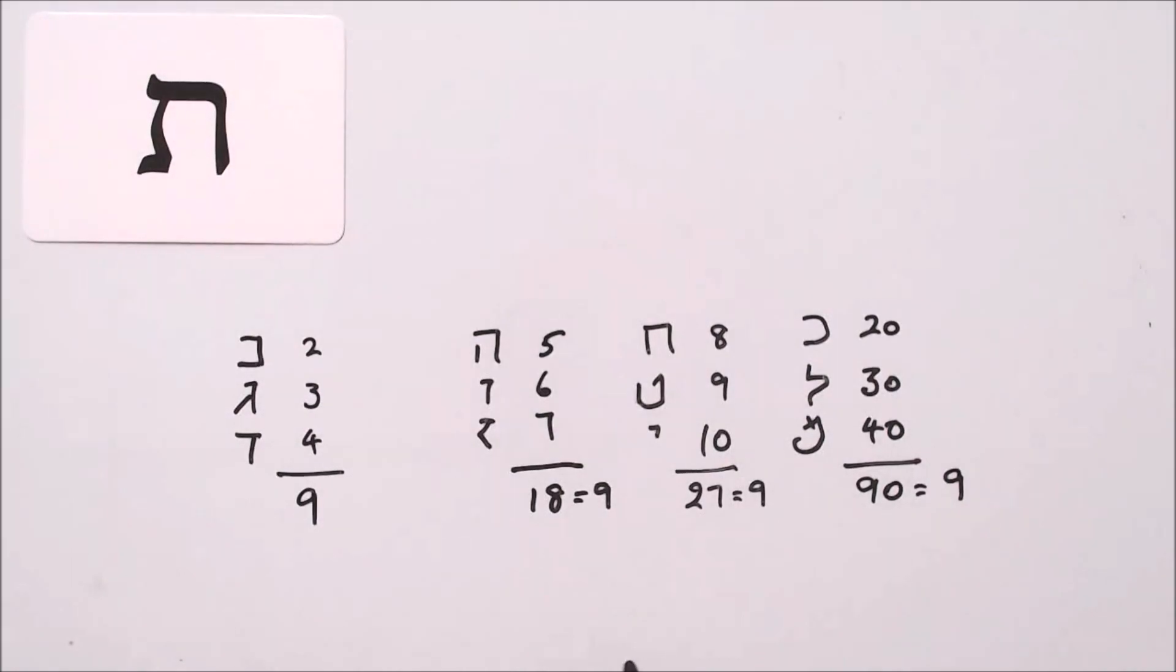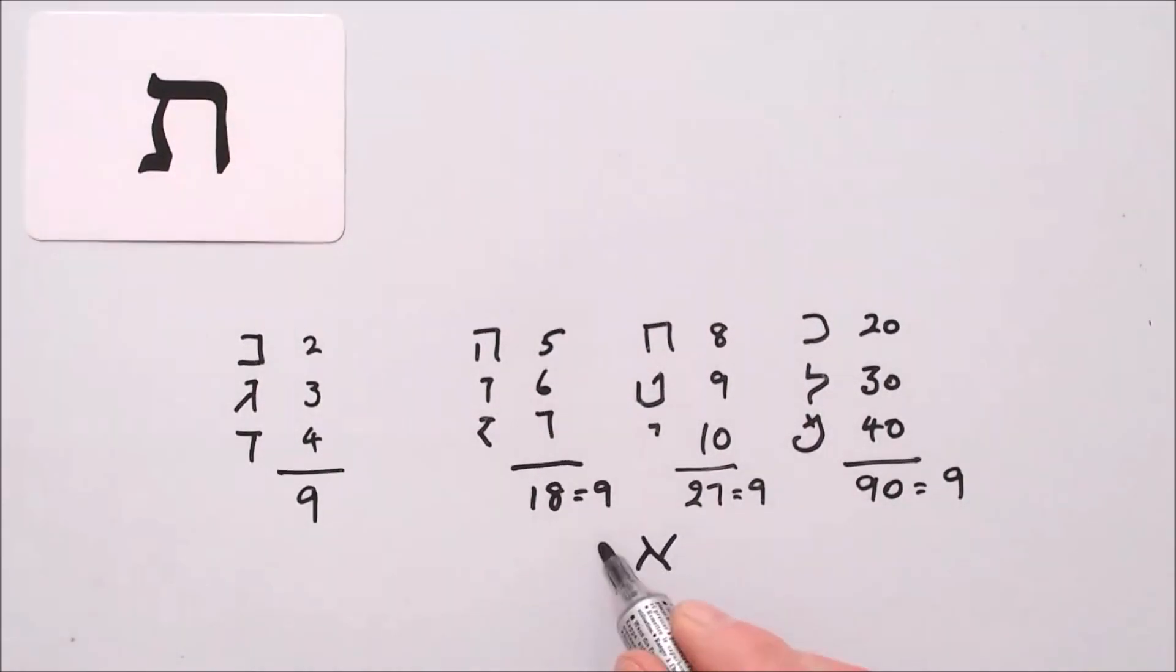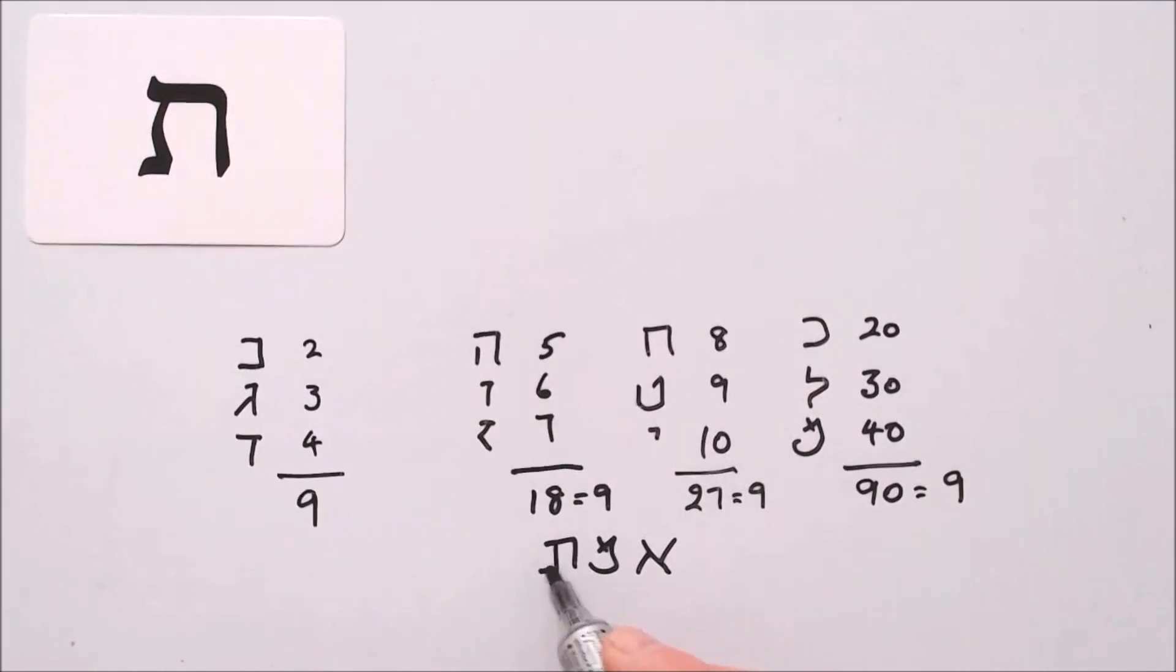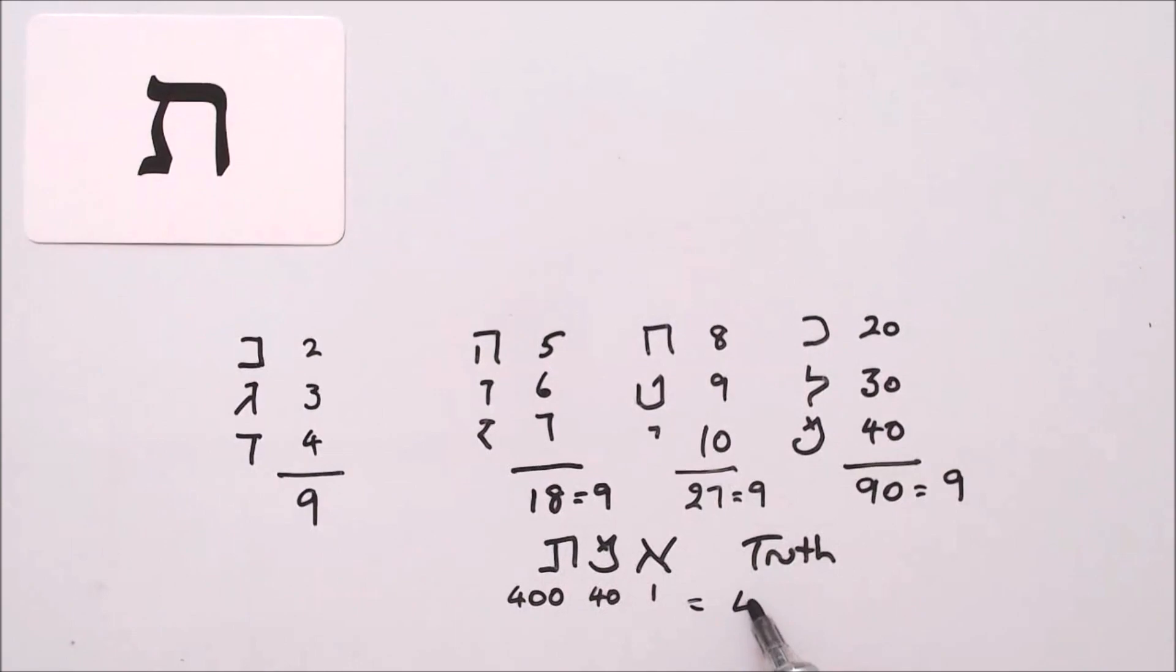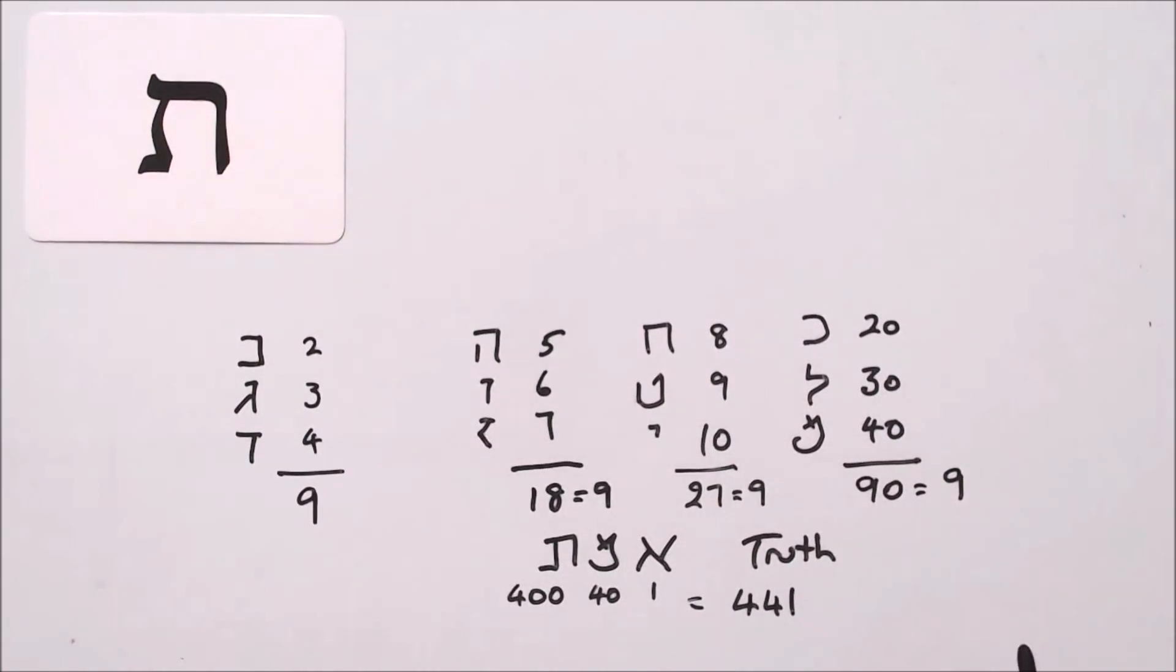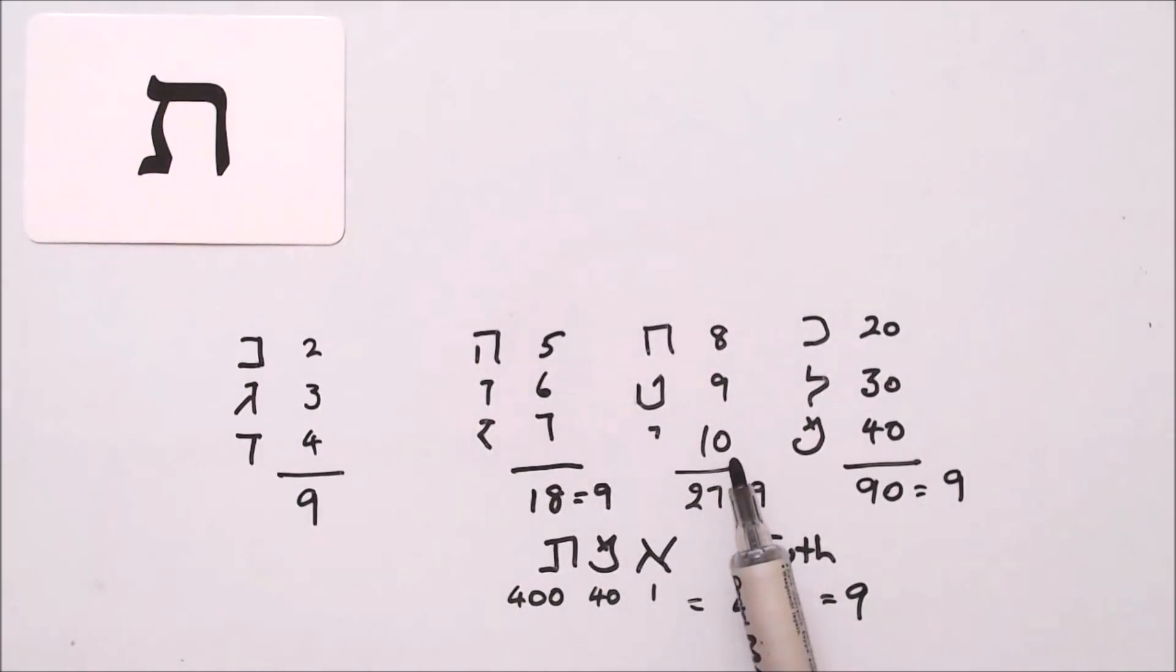Now, the significance of this is found when we take the word emet, which you know means truth. Aleph is one, Mem is forty, Tav is four hundred. Four hundred plus forty is four forty plus one is four forty-one. To get the digit sum of truth, four plus four is eight plus one equals nine. Each of the blocks of scripture, each of the blocks of the letters adds up to the same digit sum as truth. Nine.